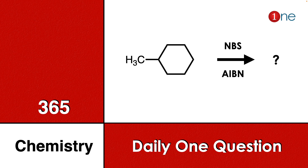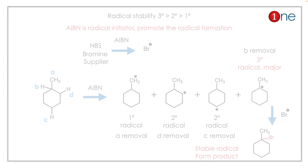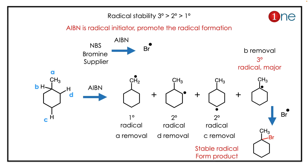Welcome to One Chemistry. This is the 365 Chemistry Series — one question for you daily. Here, cyclohexane is attached with a methyl group. You are reacting it with N-bromosuccinimide (NBS) and AIBN. You have to find the final product.